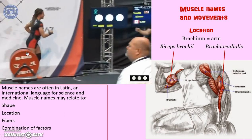Muscle names are often in Latin because we want an international language that we can all communicate with. The names are often based on shape, location, fibers, or other factors. So let's dive in.